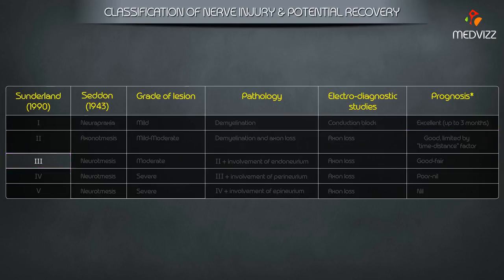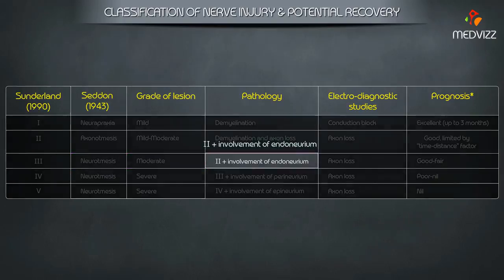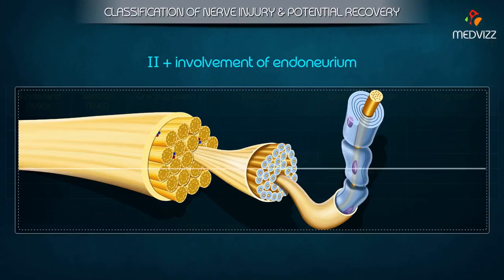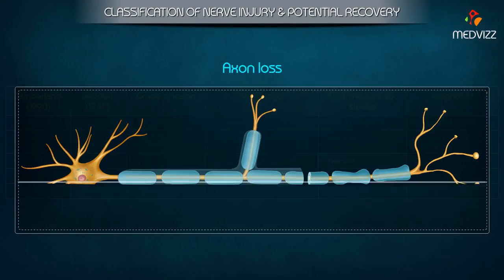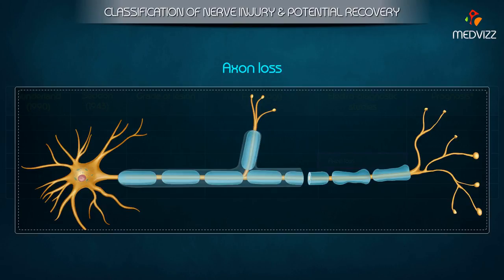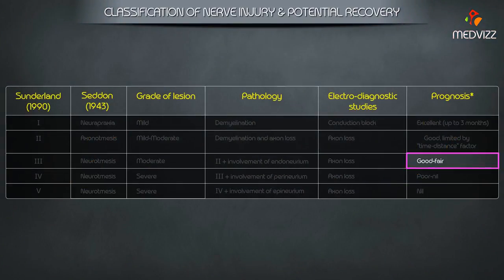Grade 3 of the Sunderland Classification corresponds to Neurotmesis of the Seddon Classification. The grade of lesion is moderate. Pathology is Grade 2 plus involvement of the endoneurium. Electrodiagnostic studies show axon loss. Prognosis is good to fair.